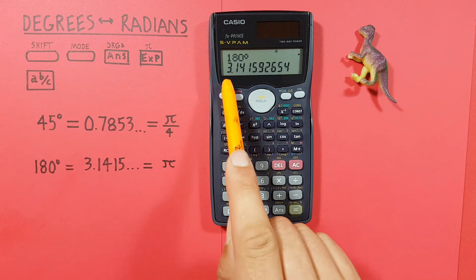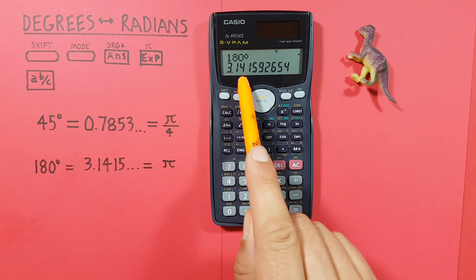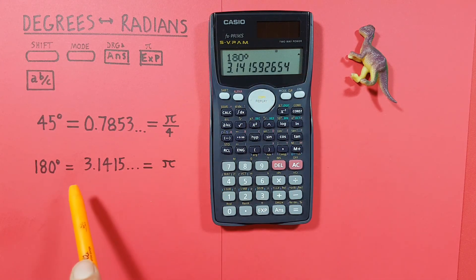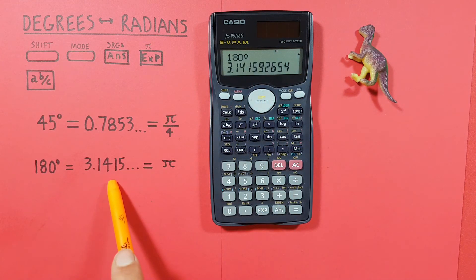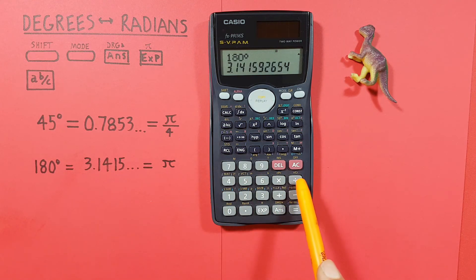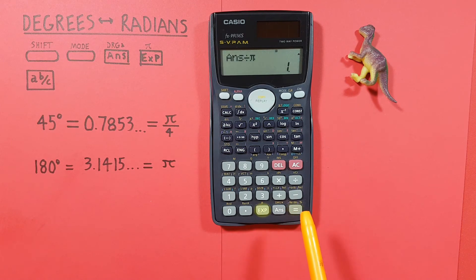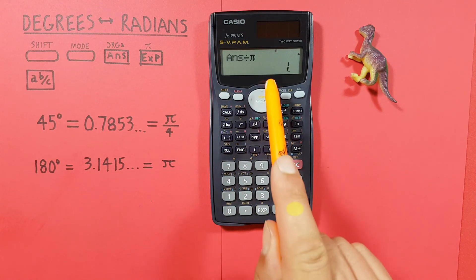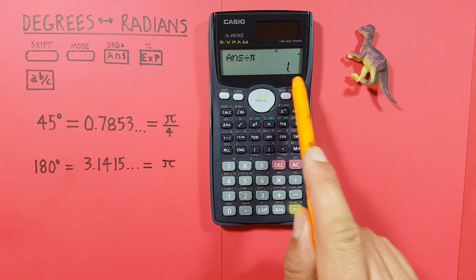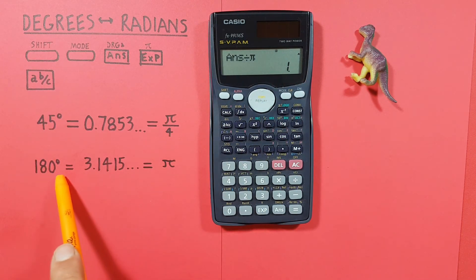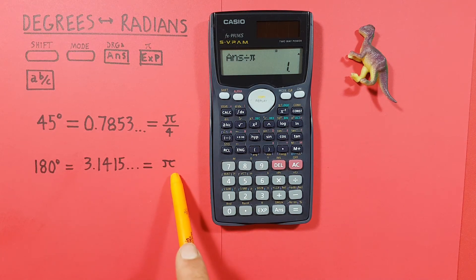We see we get 3.1415 etc., which should look familiar. But just in case it doesn't, we can divide that by pi and see we get a result of 1. So 180 degrees is equal to pi.